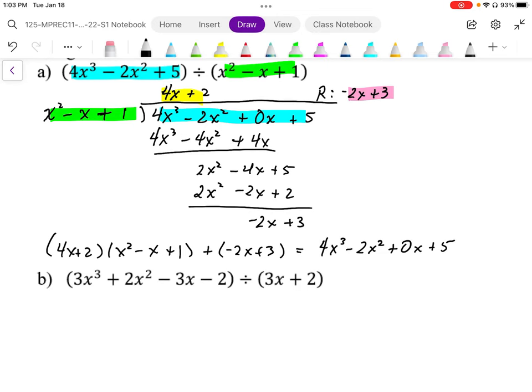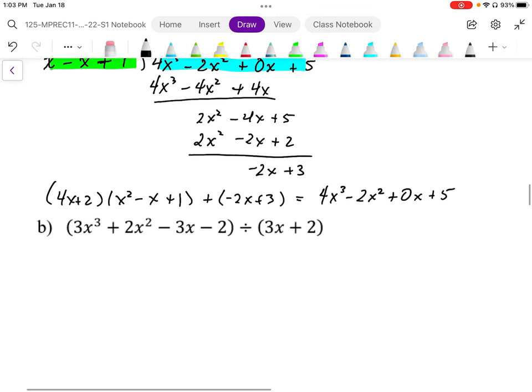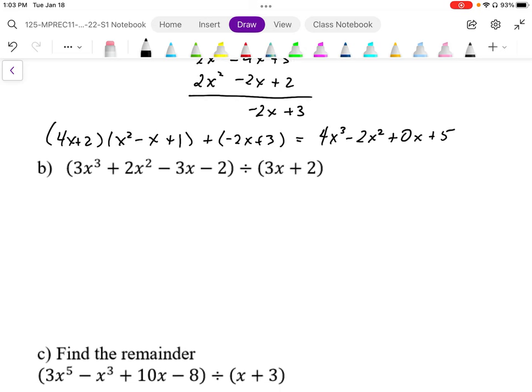Here we have the coefficients for all the powers: x³, x², x¹, and power 0. We're going to divide 3x + 2 into 3x³ + 2x² - 3x - 2. So we're going to multiply by x².